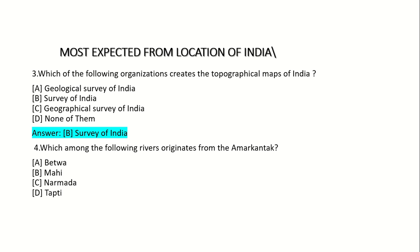Fourth question: Which among the following rivers originates from Amarkantak? Option A: Betwa. Option B: Mahi. Option C: Narmada. Option D: Tapti. Answer: Option C — Narmada.